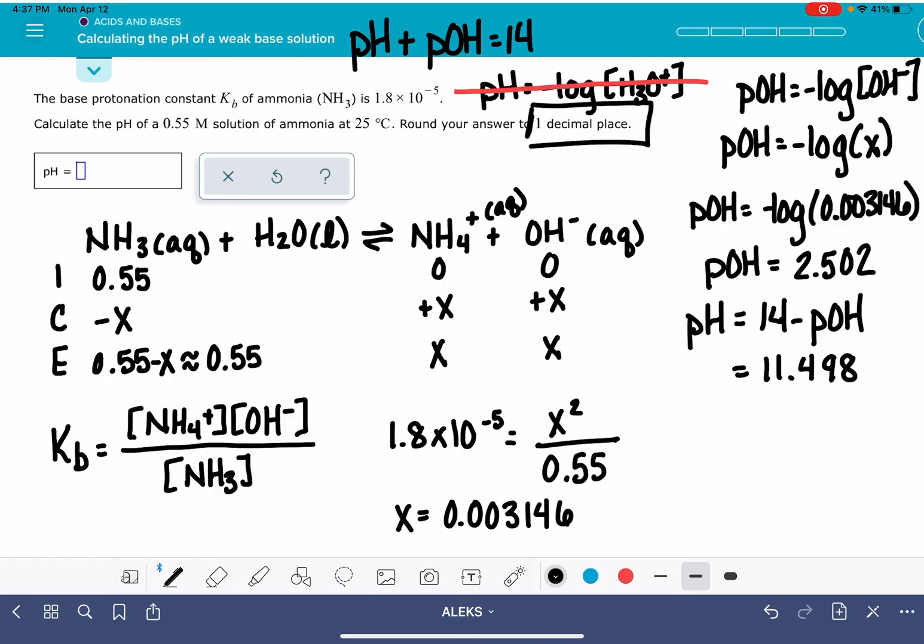Aleks wants this to one decimal place. It is 11.498 to one decimal place, which is 11.5.